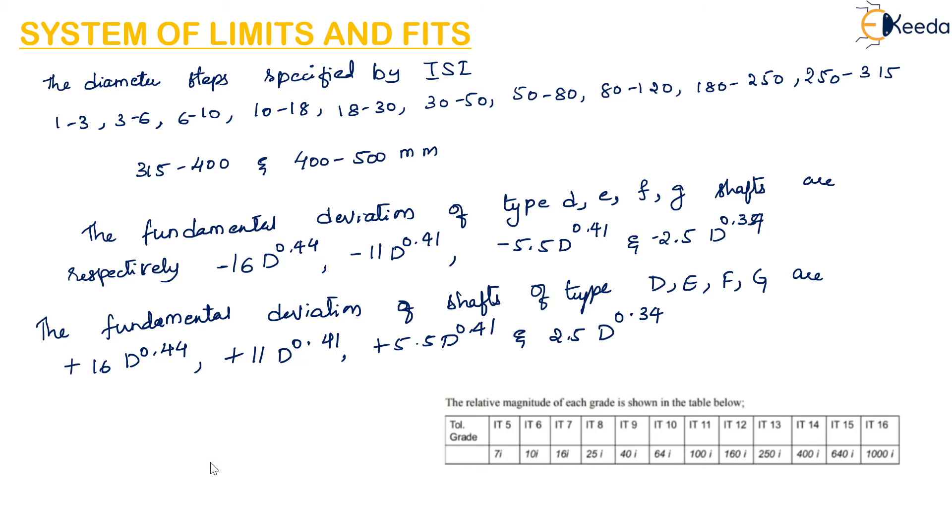The relative magnitude of each grade is shown in this table. IT6 equals 10 times i, that is 10i or 10 microns. IT7 equals 16i, which is 16 microns. IT11 equals 100i. IT12 can be written as 10 times IT7, which is 10 times 16i, which equals 160i or 160 microns. The same way we can calculate for all the grades.